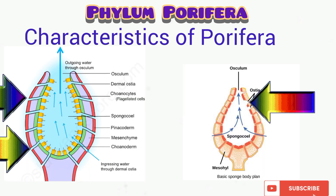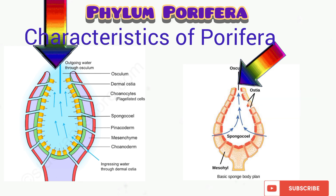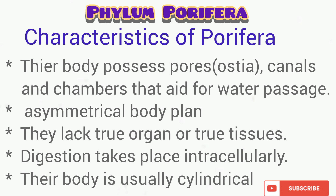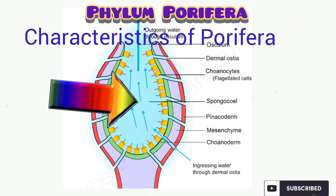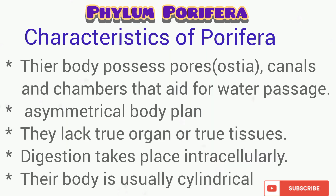You can see the ostia and the oscula from the diagram. Note that the word oscula is a plural term; the singular is osculum, and the singular for ostia is ostium. Note that the canal or space within the body of the sponges is called the spongocoel. Also note that they have a body canal system which we'll discuss later. They lack true tissues or organs, and digestion in this organism takes place intracellularly, that is, within the cell.